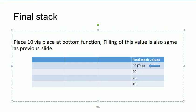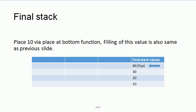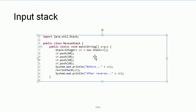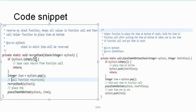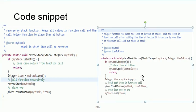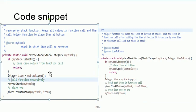So this algorithm basically works via recursion. Let's see the example via code snippet. First of all, I have a stack in which I have pushed 40, 30, 20 and 10, so 40 will be at the bottom of the stack. There are two call stacks — the call stack of the reverse function A and the call stack of place item at bottom. From the call stack of reverse stack A, items are popped one by one.